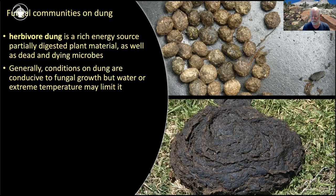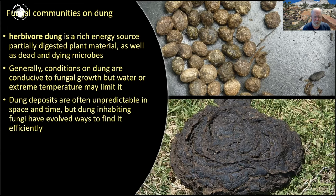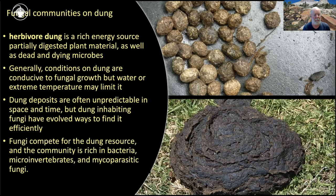As dung dries up, everything shuts down, and when it wets back up it'll start again. Dung deposits are notoriously unpredictable in time and space — if you were randomly searching the planet for dung, it would be a bad strategy. So fungi have come up with two particular ways to efficiently find dung and disperse to it. Once there, fungi compete for the resource, and the community is rich in bacteria, microinvertebrates, and mycoparasitic fungi — all scrambling for a piece of the pie, a cow pie in this case.